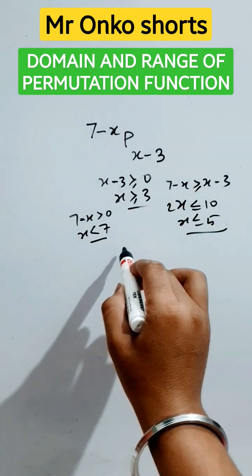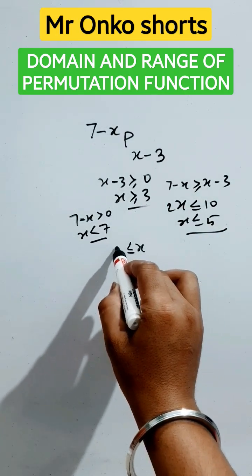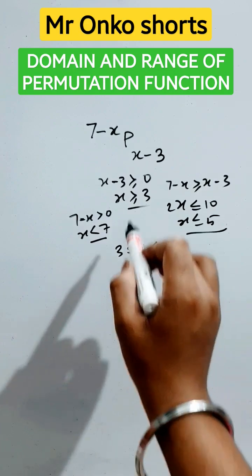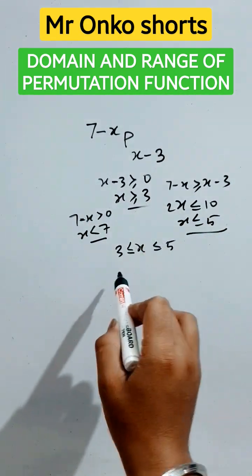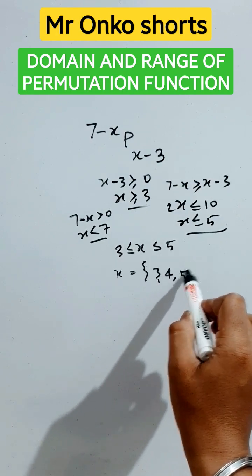Equating these three parts, we get x is greater than or equal to three and less than or equal to five. And x must be a real positive number and integer obviously. So x is just three, four, and five.